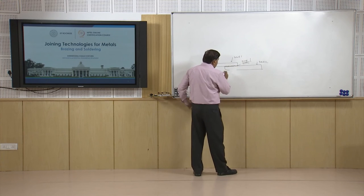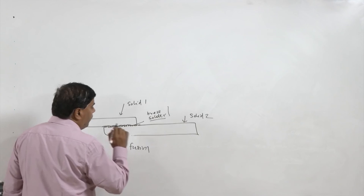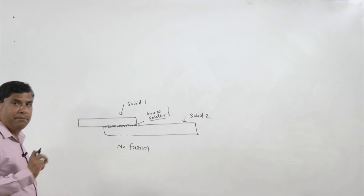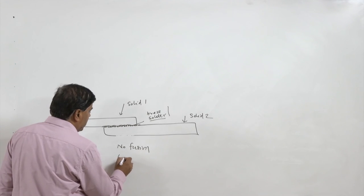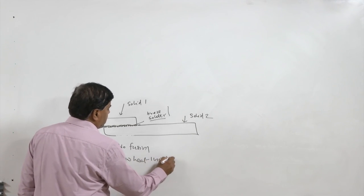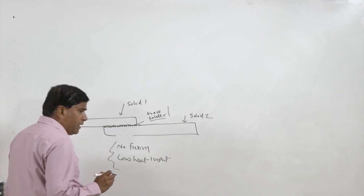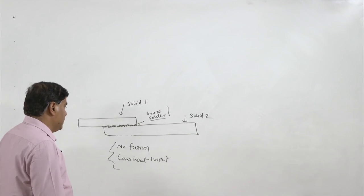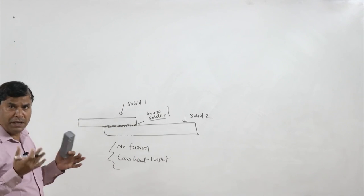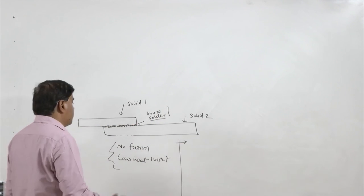In these processes, only heating is involved — there is no fusion of the base metal, and the heat required for melting the filler metal is also very limited. So the heat input is low in these processes. These are two very attractive features, and because of them these processes offer many advantages.